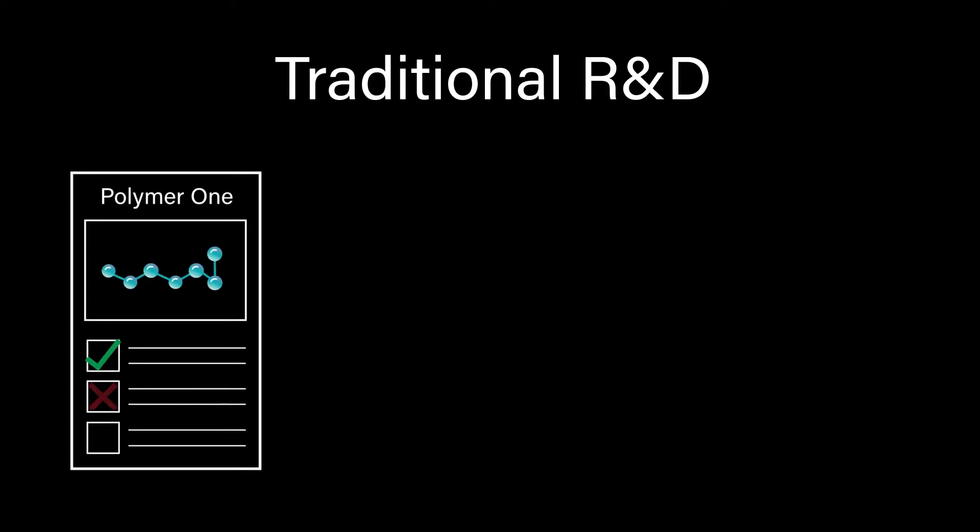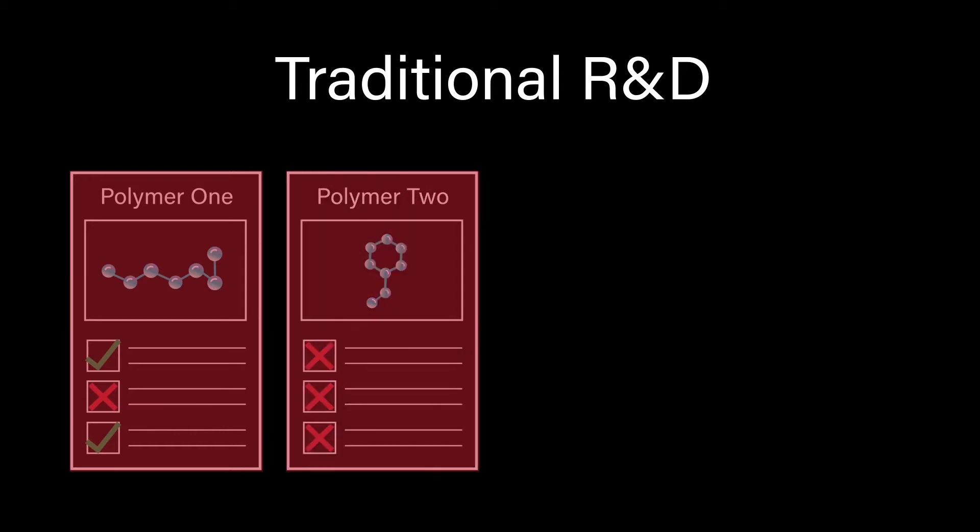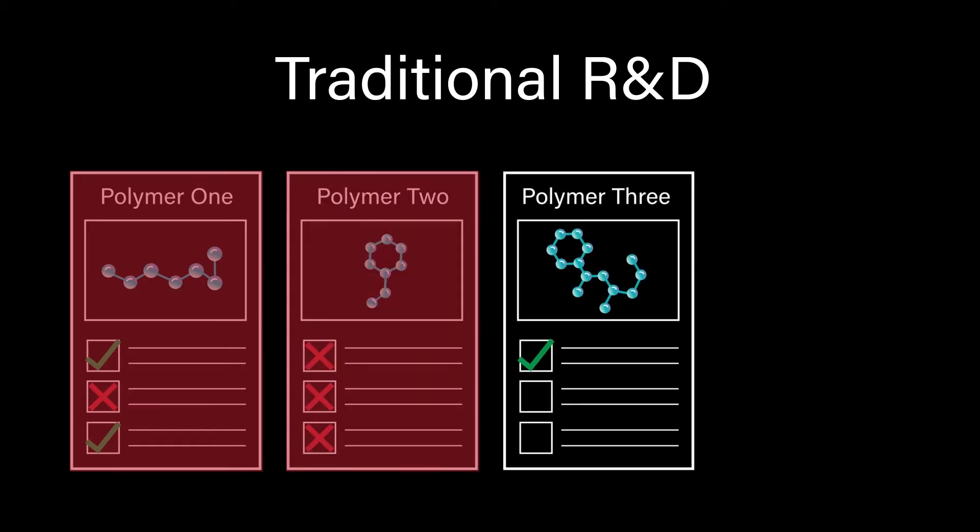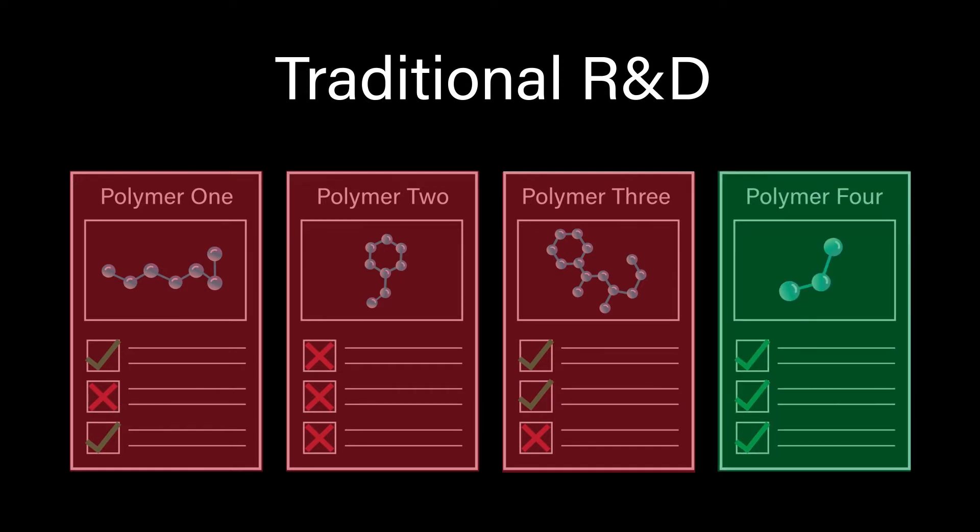Traditional R&D is a multi-step iterative process where researchers synthesize new polymers. They test their properties and reformulate until the best product is achieved. The optimization process is labor-intensive and costly.